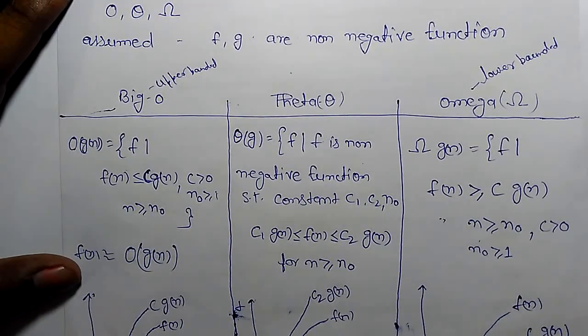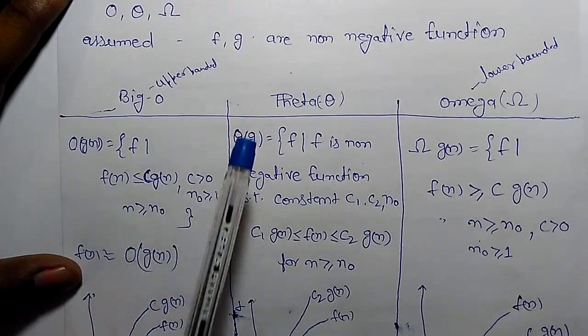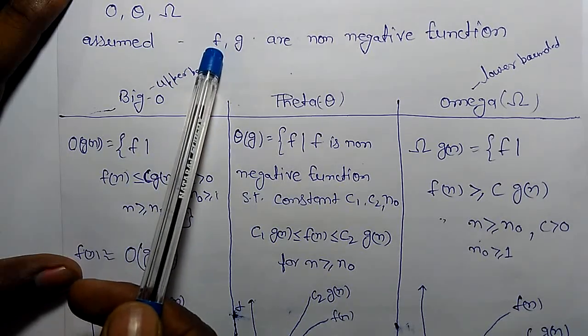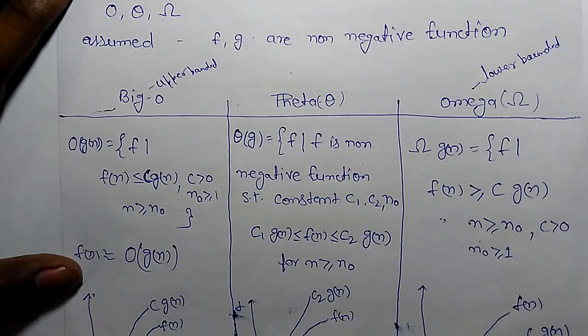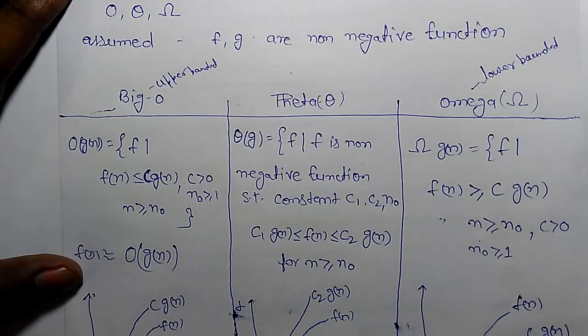In this calculation we have taken functions F and G as non-negative functions. What is the meaning of non-negative function? For any resources like time or space, we do not take any negative form. It means if an algorithm runs, it runs either one second, two seconds, one minute, two minutes, hours, but it can't be negative.